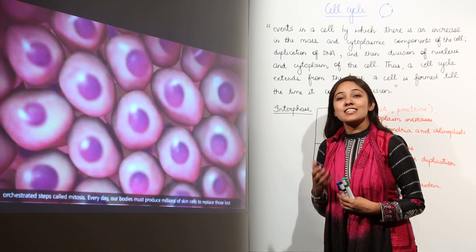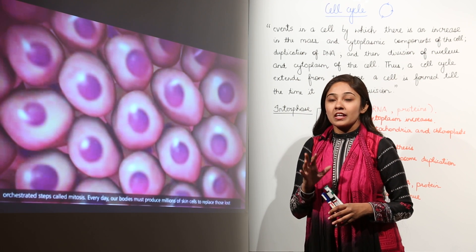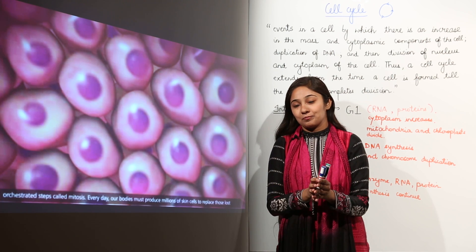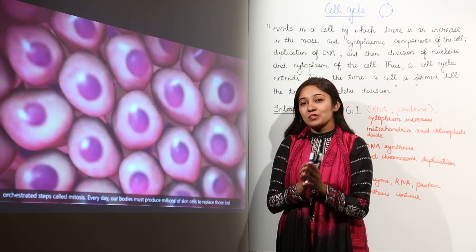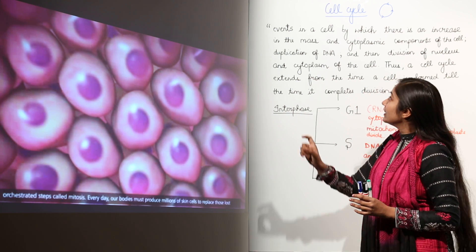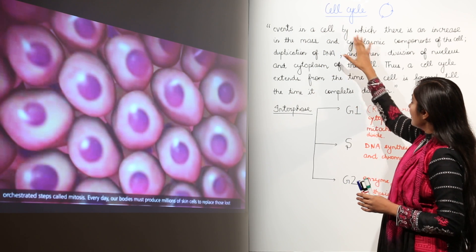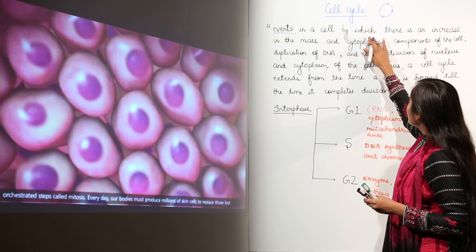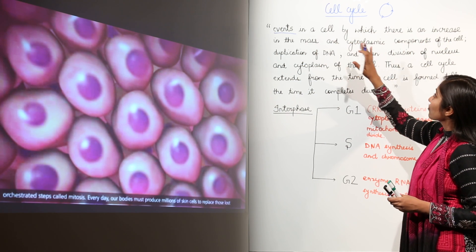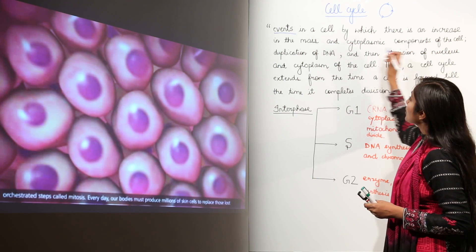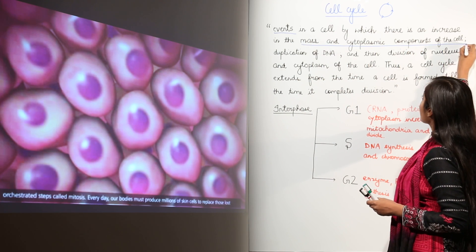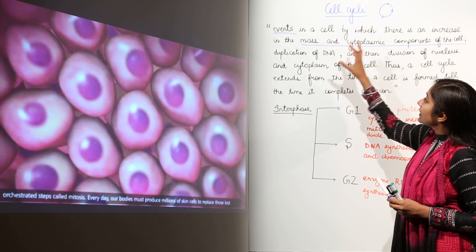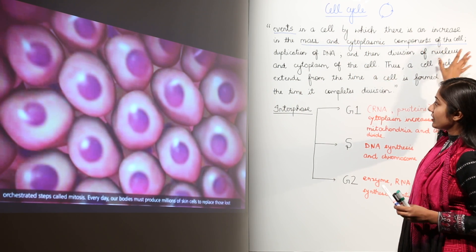We have discussed mitosis. Now mitosis is just a phase of the whole cell cycle. When we talk about the cell cycle, cell cycle refers to the events in a cell by which there is an increase in the mass and cytoplasmic components of the cell. During the cell cycle, we begin with a new cell and there is an increase in the mass and cytoplasmic components.